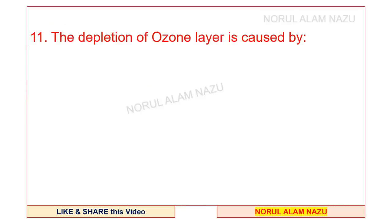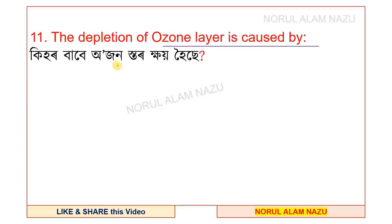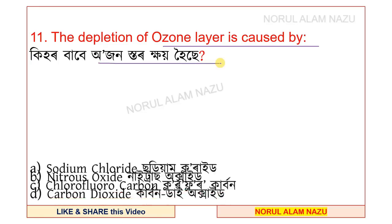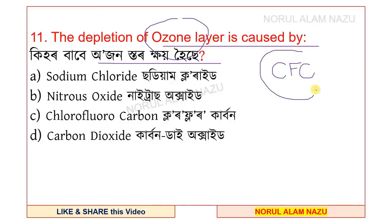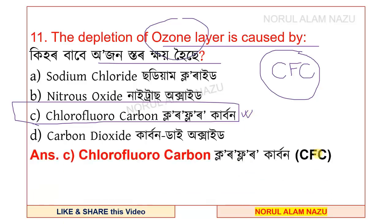Question number 12. The depletion of the ozone layer is caused by CFC — chlorofluorocarbon. The ozone layer is being depleted due to CFC. Option C, chlorofluorocarbon, is the correct answer.